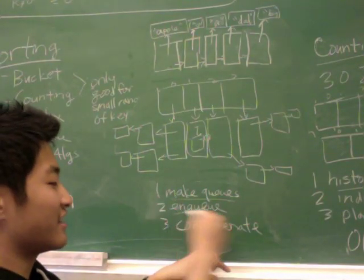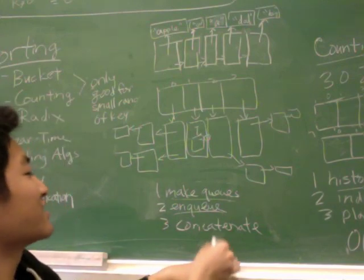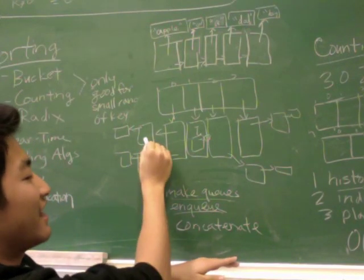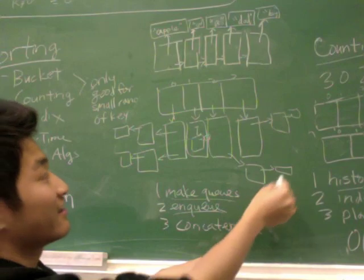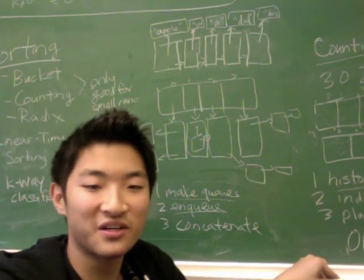After you're done enqueuing all the objects, you concatenate the queues. You have apple, A, by, car, and dad in that order. That's how Bucket Sort works.